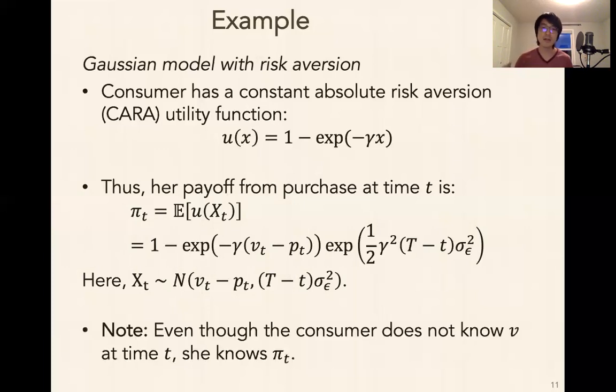And the second thing to note is that even though the consumer doesn't know her true valuation at time T, she can calculate pi of T. So pi of T is really her expected utility from purchasing a time T, accounting for all the uncertainty about her valuation. So even though she doesn't know her true valuation, she's able to calculate pi of T, and that's really what's essential here. It's really her accounting for her uncertainty and her risk aversion in her utility function, and calculating the expected utility, which she uses to make her decisions.